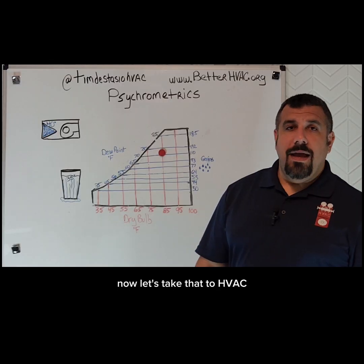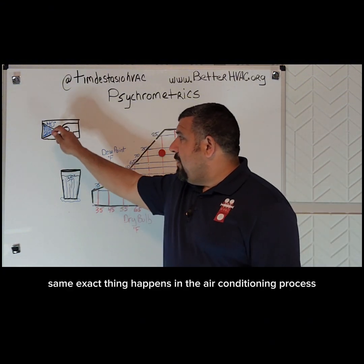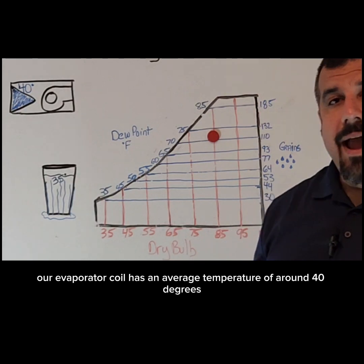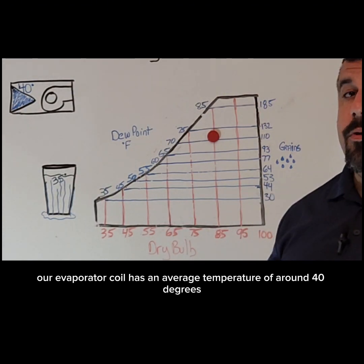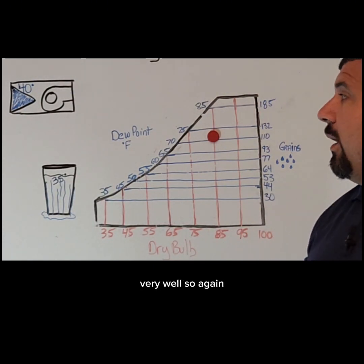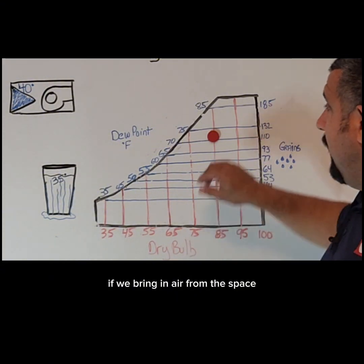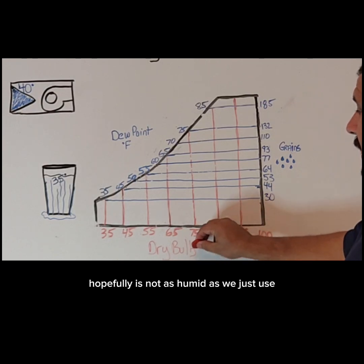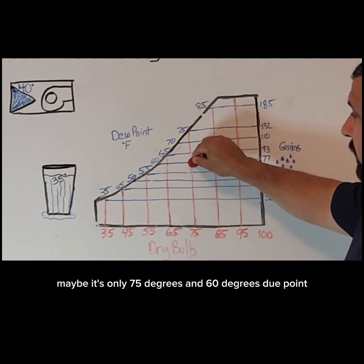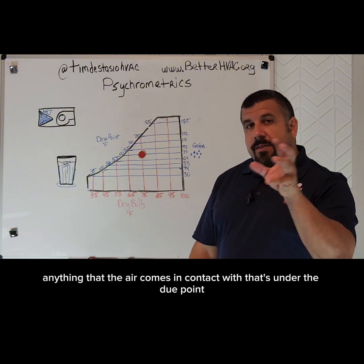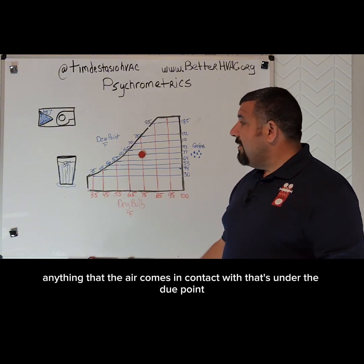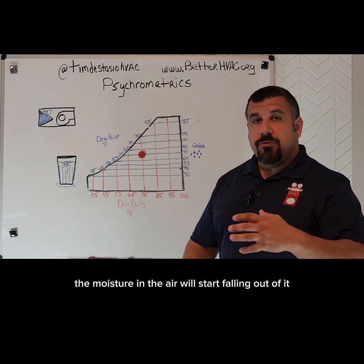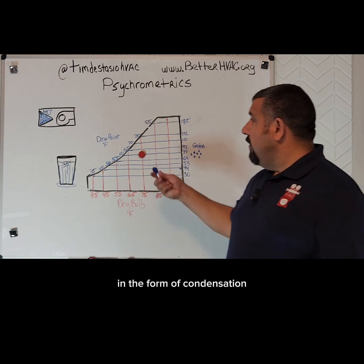Now let's take that to HVAC. The same exact thing happens in the air conditioning process. Our evaporator coil has an average temperature of around 40 degrees if the system is performing very, very well. If we bring in air from the space — hopefully not as humid as we just used, maybe it's only 75 degrees and 60 degrees dew point — anything that the air comes in contact with that's under the dew point, in this case 60 degrees, the moisture in the air will start falling out in the form of condensation.